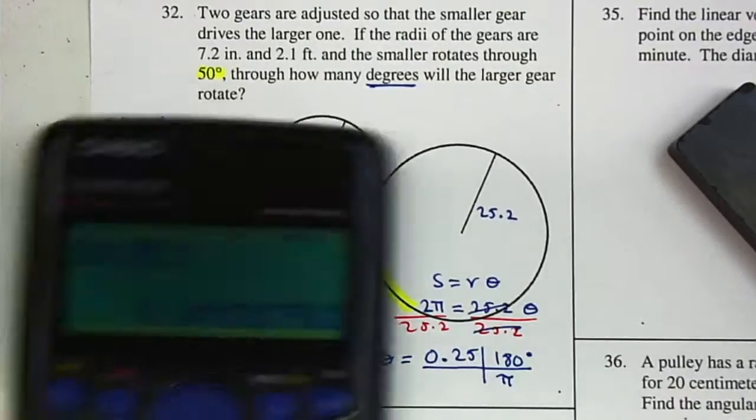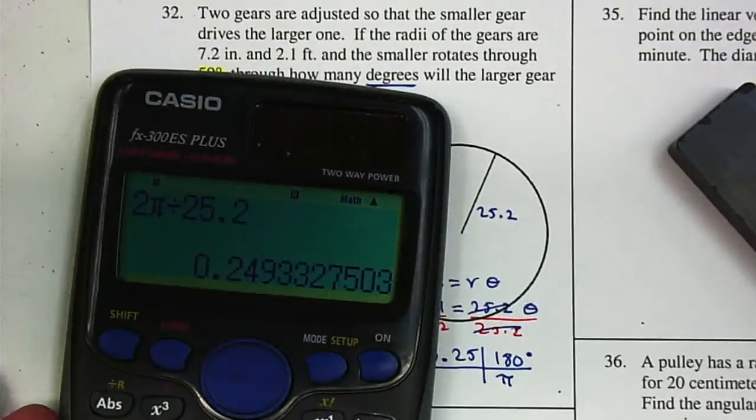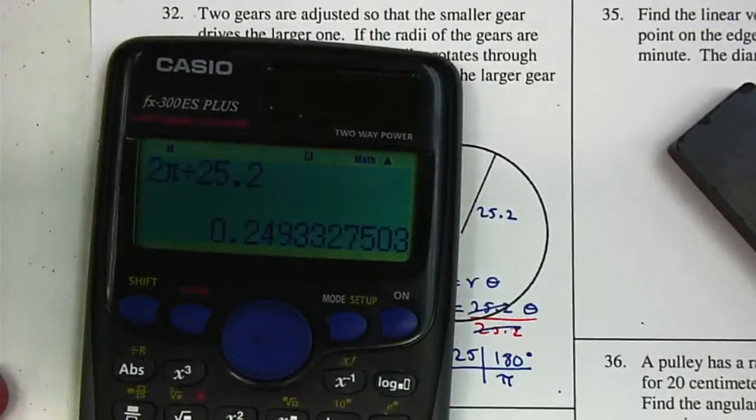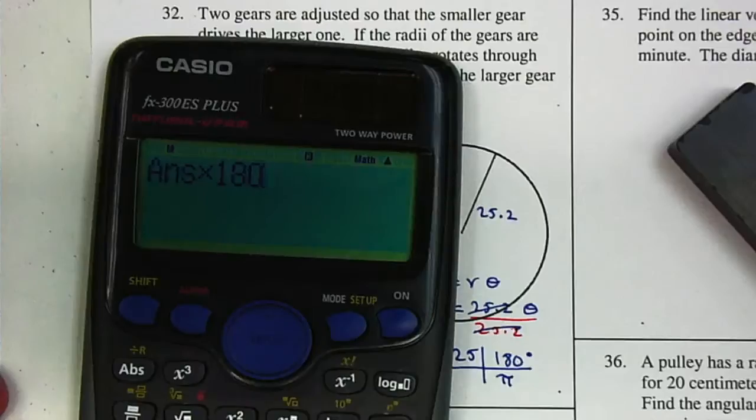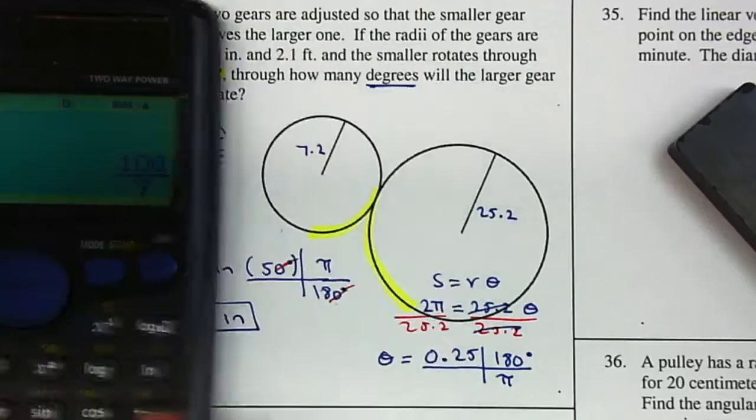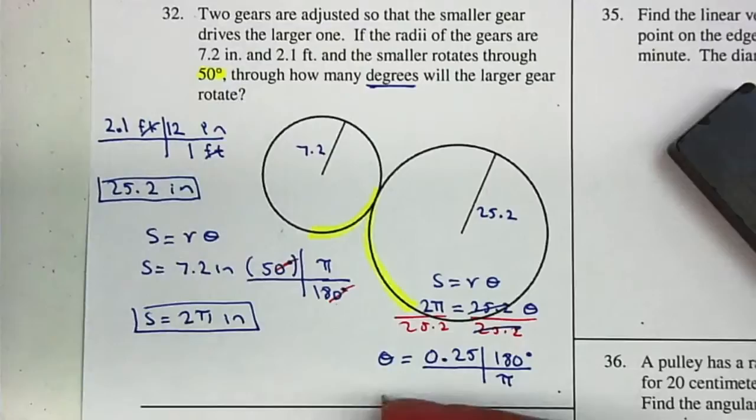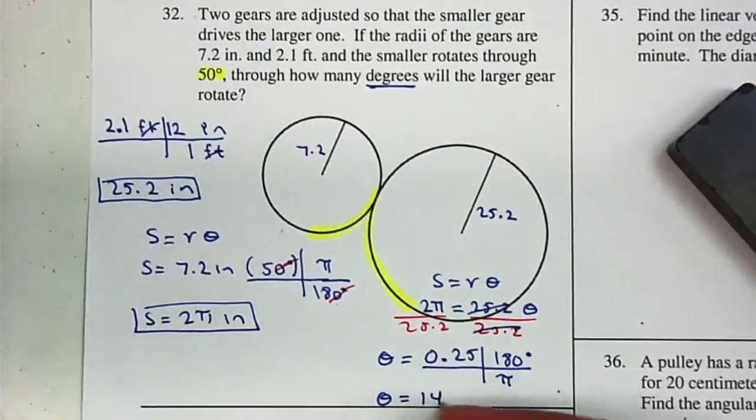So I'm going to multiply by 180 and divide it by pi. So the angle will be 14.29 degrees.